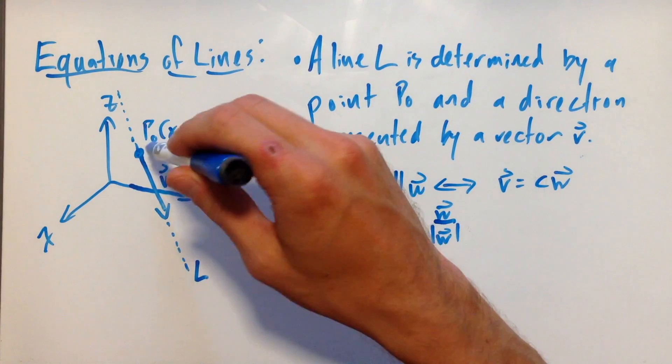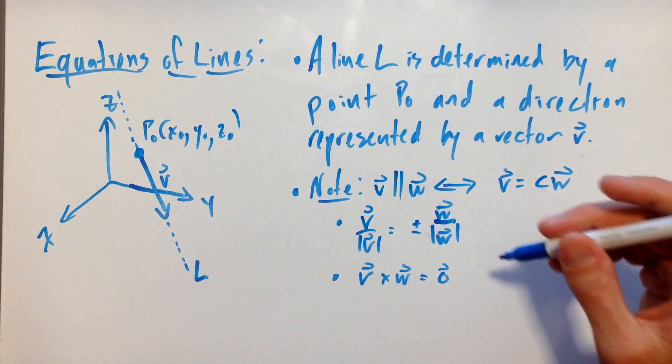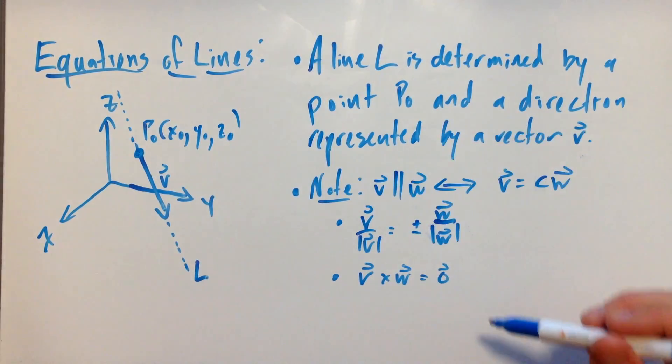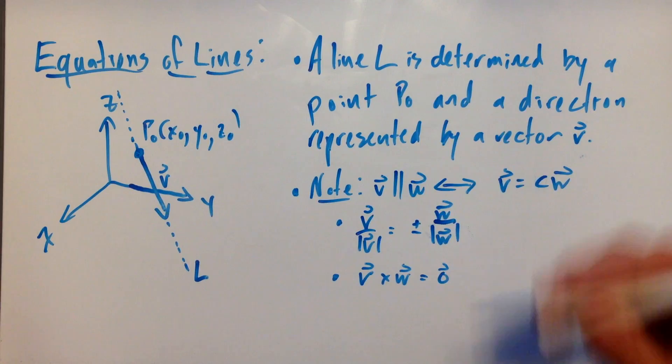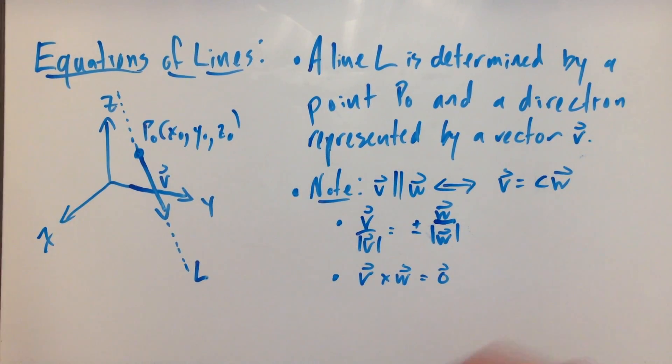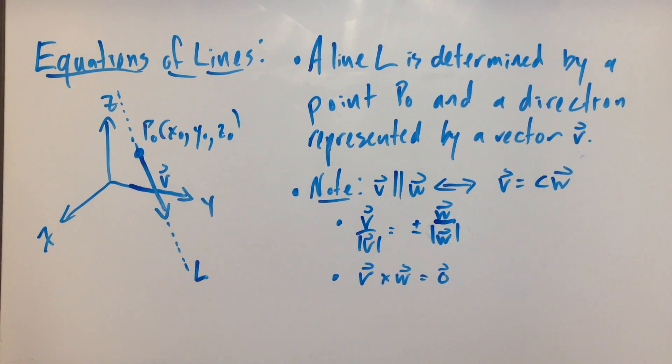This choice of a vector v is well-defined up to a scalar. We're saying that v is parallel to the line L. Two vectors v and w are parallel to each other precisely when v is a scalar multiple of w.